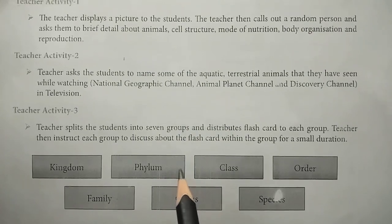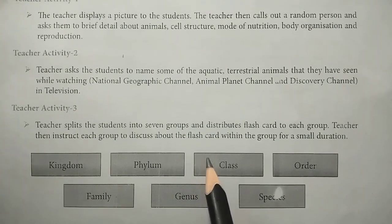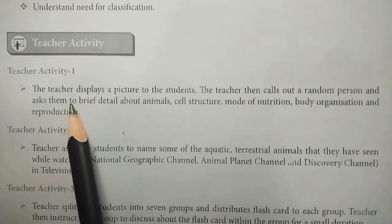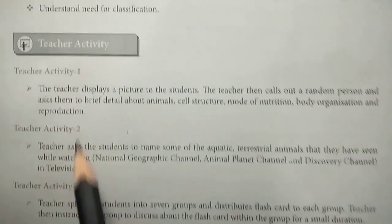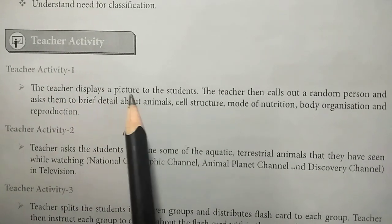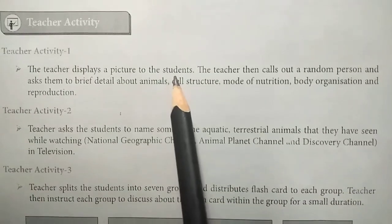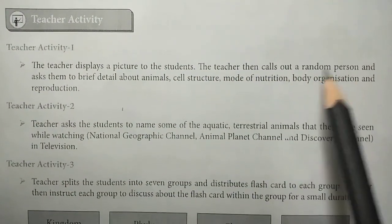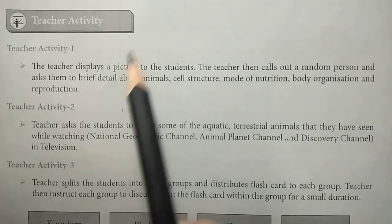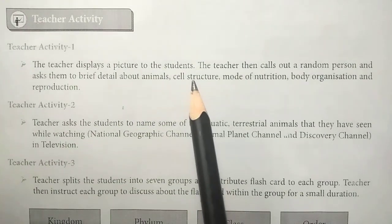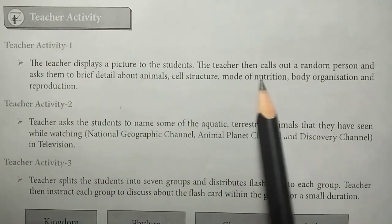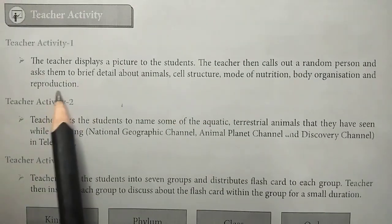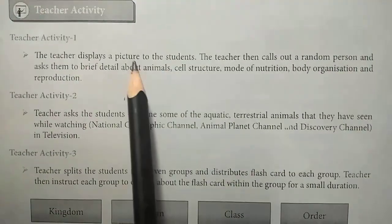We will see a video link in the description for teacher activity 1 and 2. The teacher displays a picture to the students showing random ones — the details of the animal: cell structure, mode of nutrition, body organization, and reproduction. We will see the first activity.